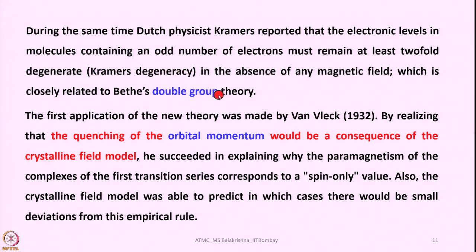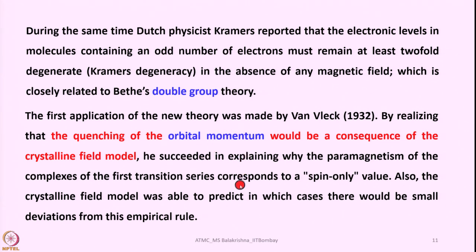Many physicists contributed significantly to crystal field theory. The first application of the theory was made by Van Vleck in 1932, realizing that the quenching of orbital momentum would be a consequence of the crystalline field model. He succeeded in explaining why the paramagnetism of complexes of the first transition series corresponds to a spin-only value, calculated using the standard equation. The crystal field model was also able to predict in which cases there would be small deviations from this empirical rule.